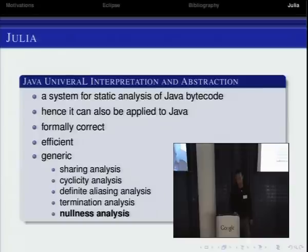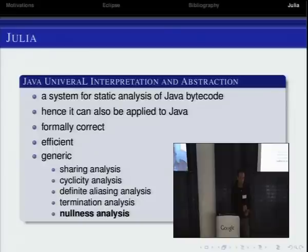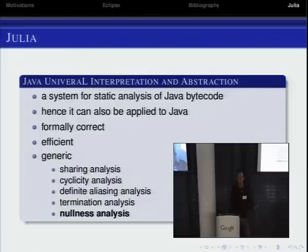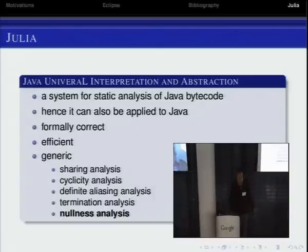Julia should be applied to Java bytecode rather than source code — you compile the source code into Java bytecode and then analyze it, so you can analyze both. You can also analyze anything that can be compiled into Java bytecode. It is formally correct, so the results are correct — you can trust them. It is efficient; we managed to analyze programs up to 10,000 methods, which is starting to be a realistic size. And it is generic — it can be used for many kinds of analysis, not just nullness.